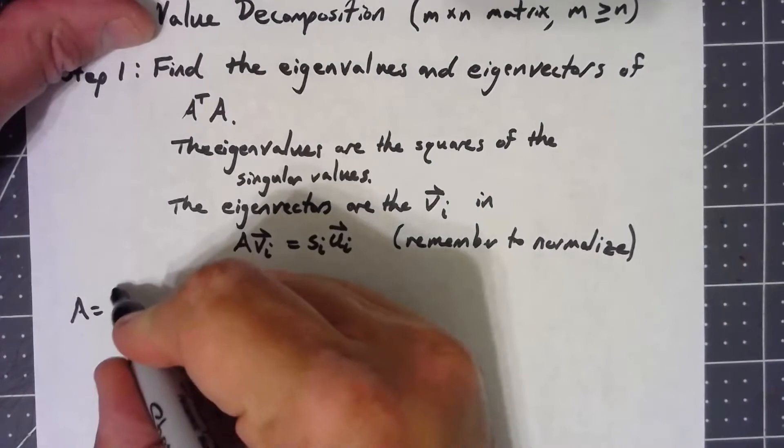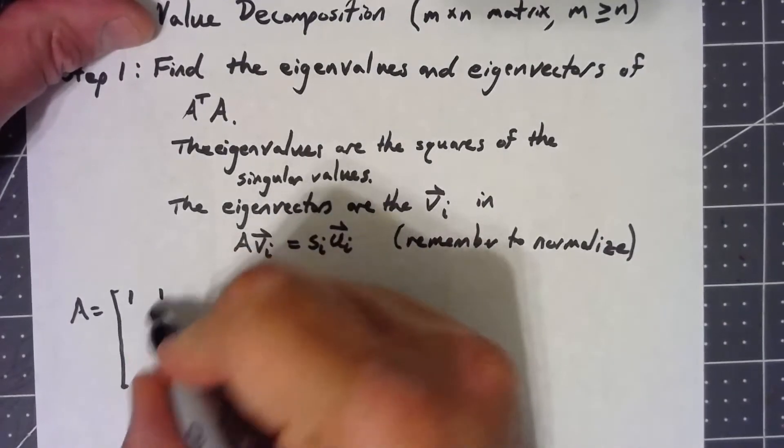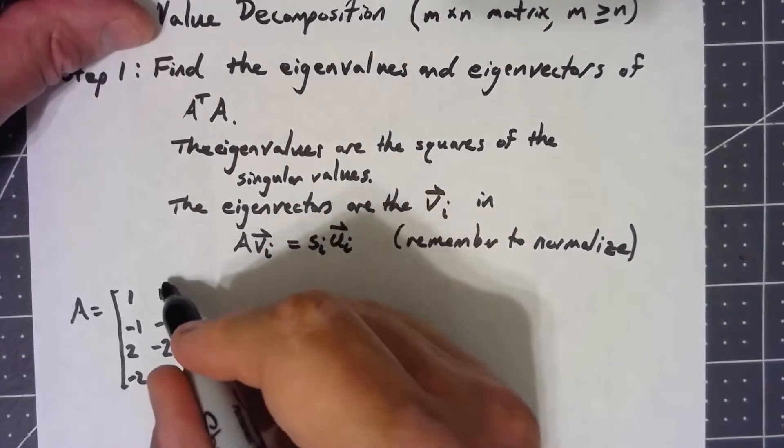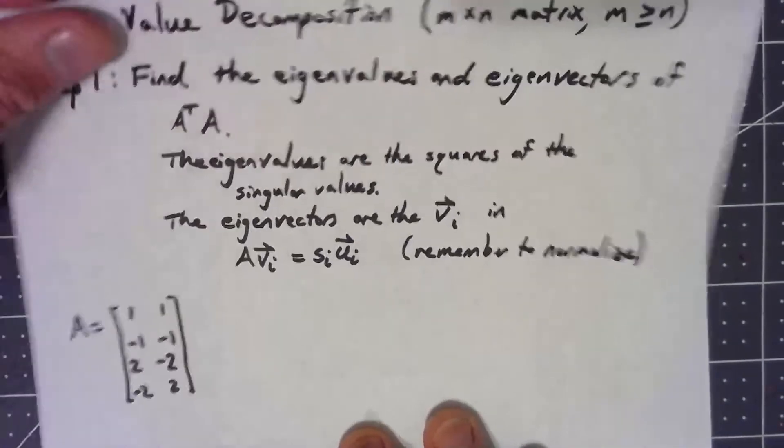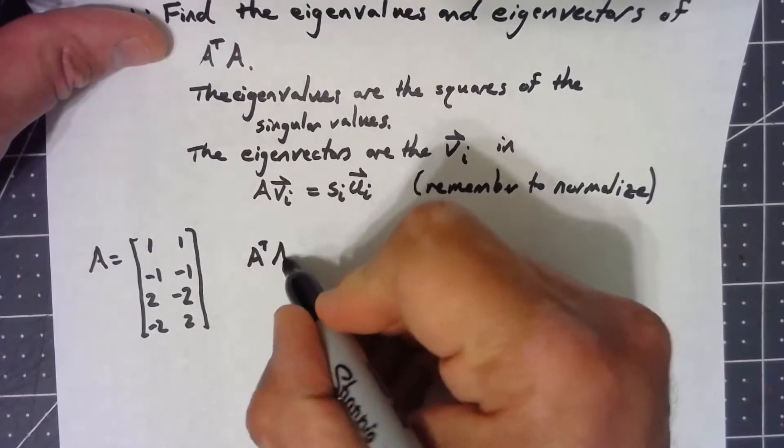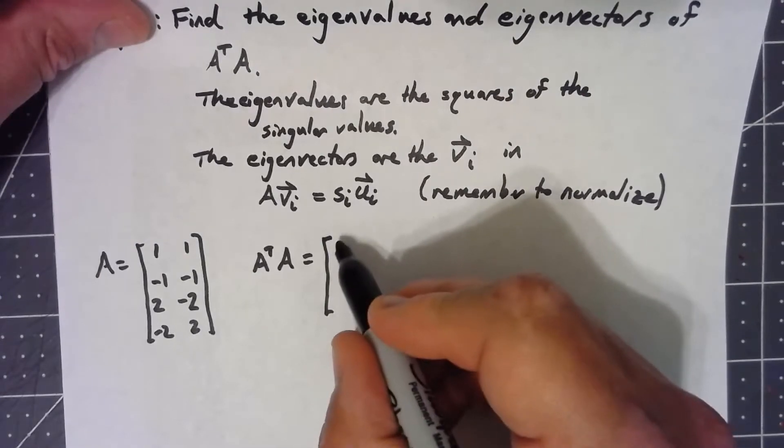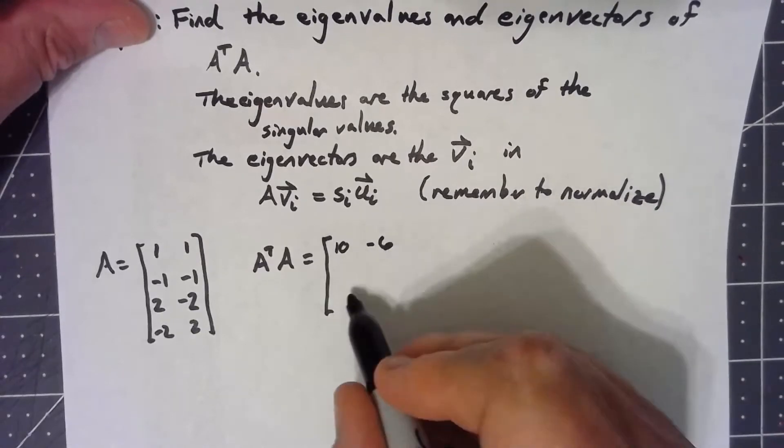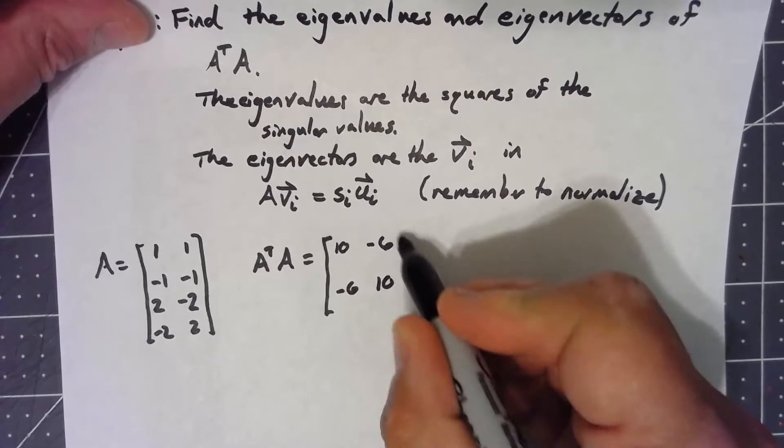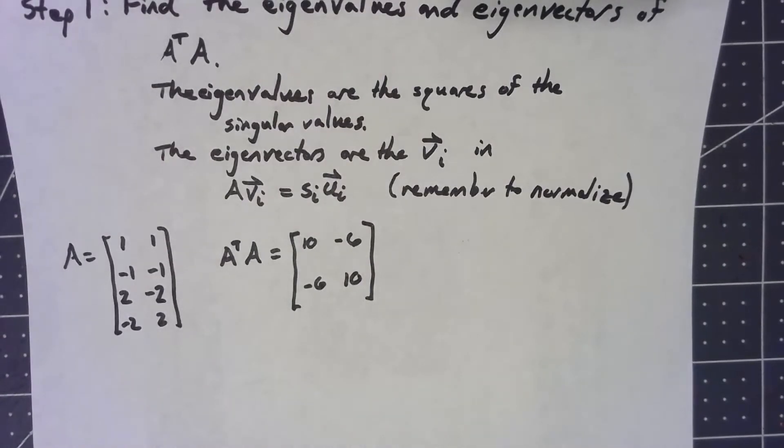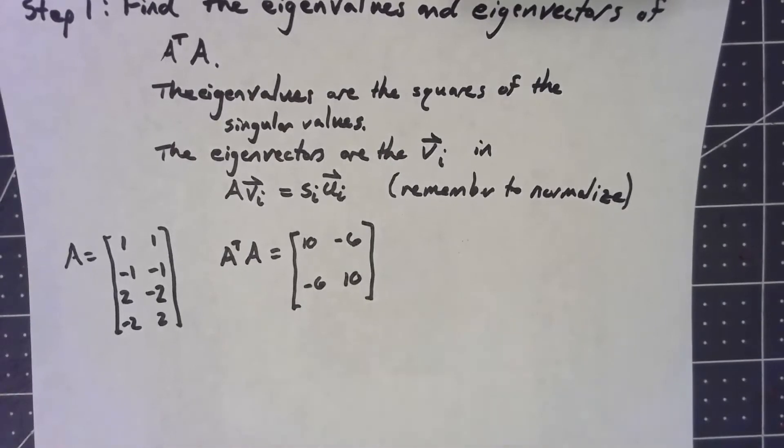Let's go ahead and take a look at an example here. Let's say my matrix A is 1, 1, negative 1, negative 1, negative 1, 2, negative 2, 2. It's a simple matrix multiplication to figure out A transpose A. At this point, it's just a 2 by 2 matrix, and we can just use the characteristic polynomial and find the eigenvalues and eigenvectors in that standard way. But of course, in general, if this came out to be a larger matrix, we'd have to do a numerical method, a QR factorization kind of thing, an iterative method, perhaps, to figure out what the eigenvalues and eigenvectors are.